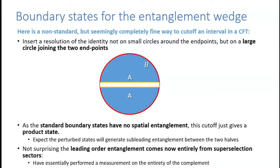By projecting the theory here, I've essentially made a complete measurement on the complement. Projecting here is equivalent to projecting along the rest of the CFT outside my interval. If I make a projective measurement on the entire rest of the system, it's not surprising that at leading order I get unentangled states designed to do exactly that. Here the 2D CFT Euclidean plane is shown with the interval and the boundary state circling the interval.